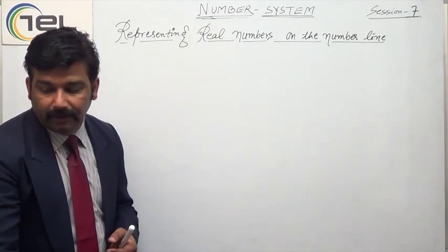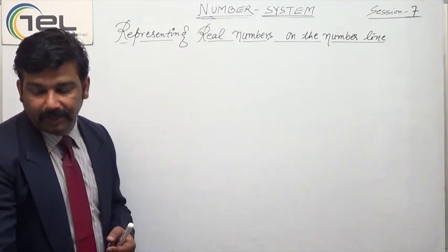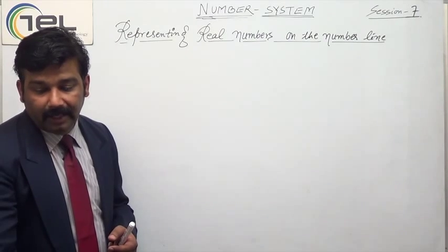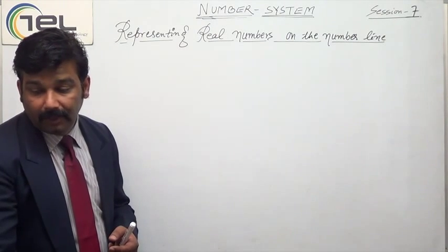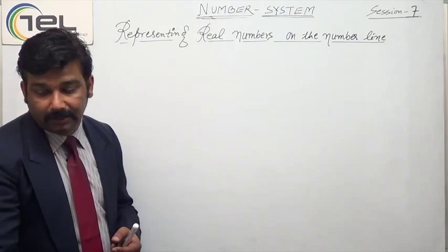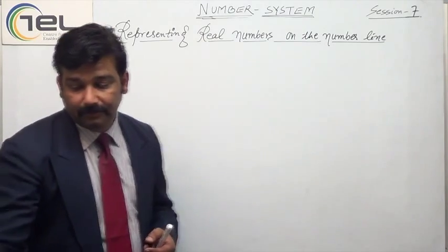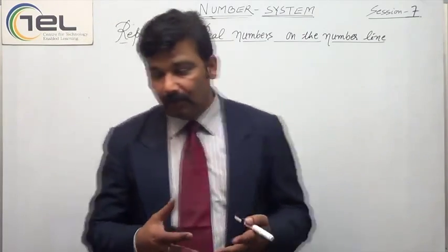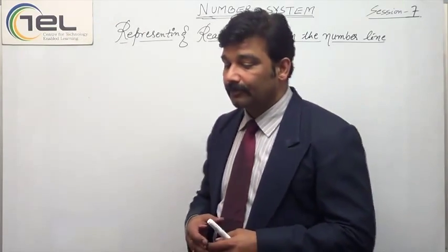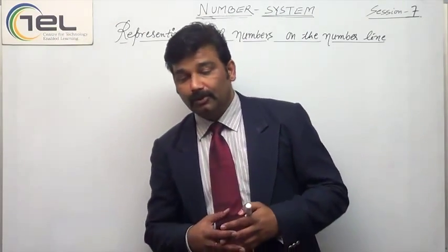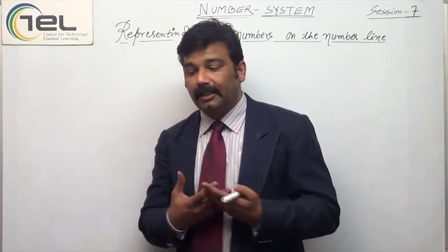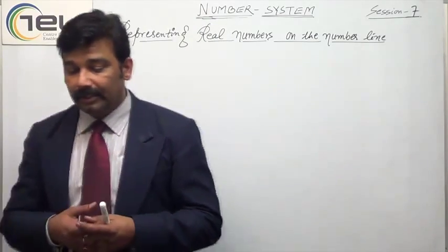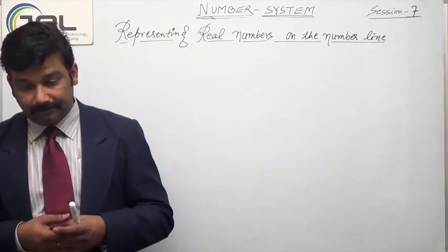We have some numbers. How do we represent all these numbers? What is the way of representing them on the number line?